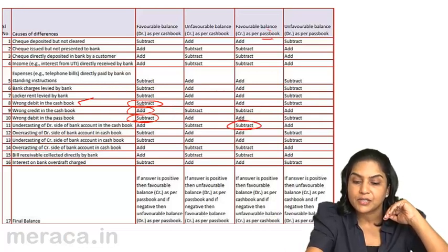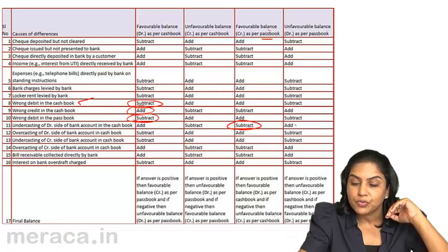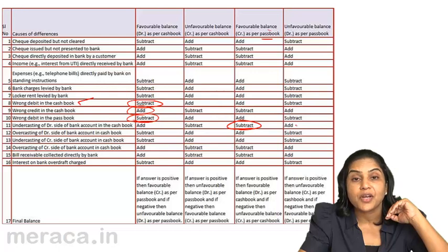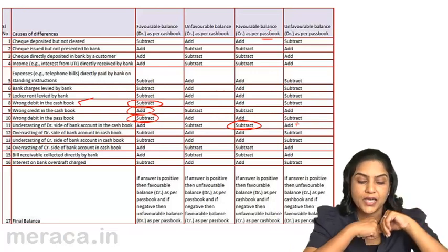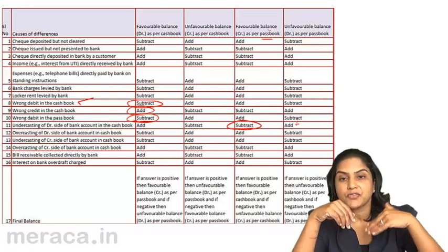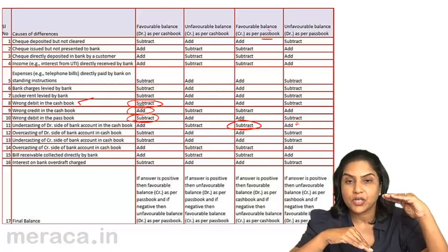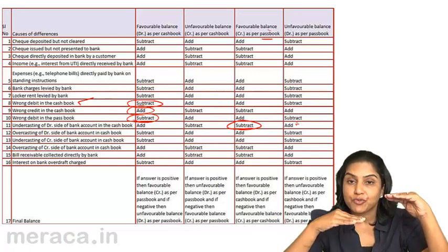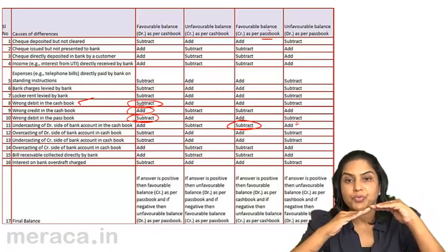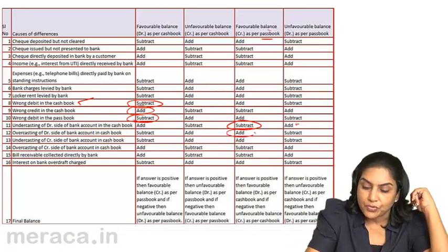This is a favorable balance as per passbook. Whatever we do in case of a favorable balance, we do just the reverse in case of an unfavorable balance. Overcasting of the debit side of the bank account in the cashbook — overcasting means more — so the cashbook balance has gone up. If you start from the passbook, we would add to arrive at the cashbook.